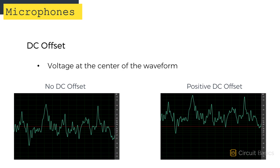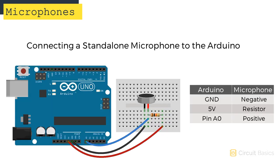Now let's see what the raw signal from the microphone looks like without a pre-amplifier. I'm connecting a standalone mic to the Arduino like this. The ground pin of the mic connects to the ground pin of the Arduino. The positive pin of the mic connects to 5 volts via a 10 kilo ohm resistor. The signal of the microphone comes from the positive pin and connects to analog pin A0. Since electret microphones output an AC signal that fluctuates up and down, we can't just use the analog read function to read it - we have to do a few extra things.